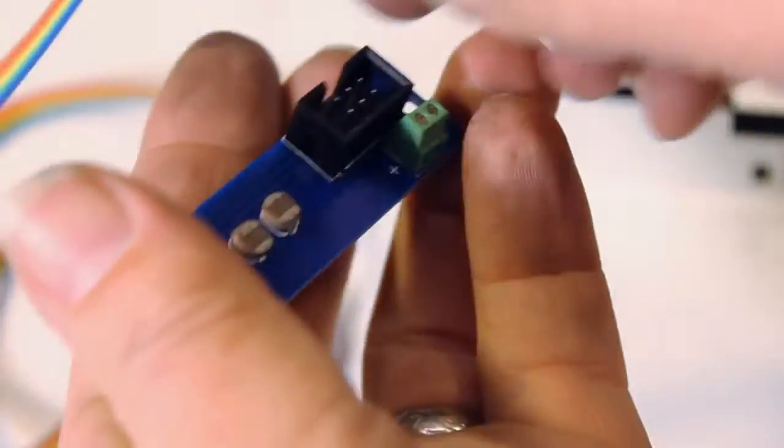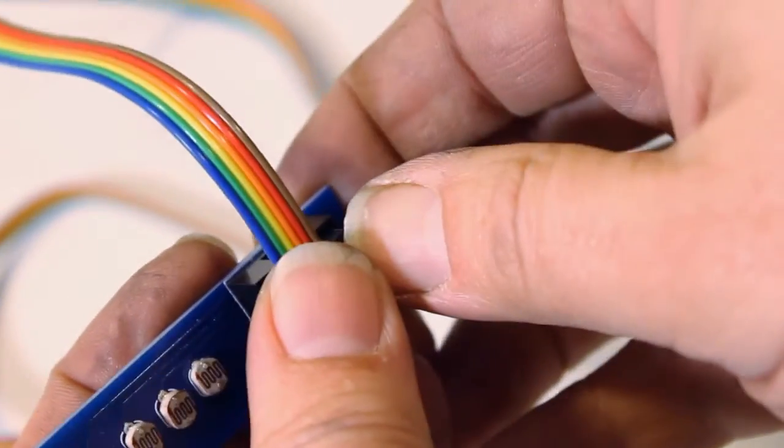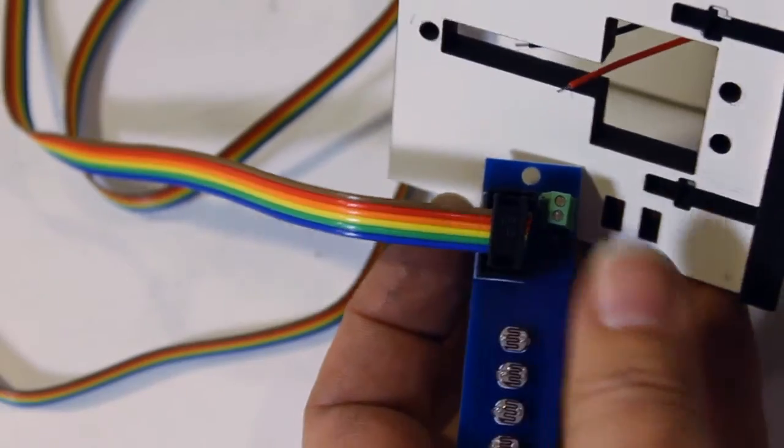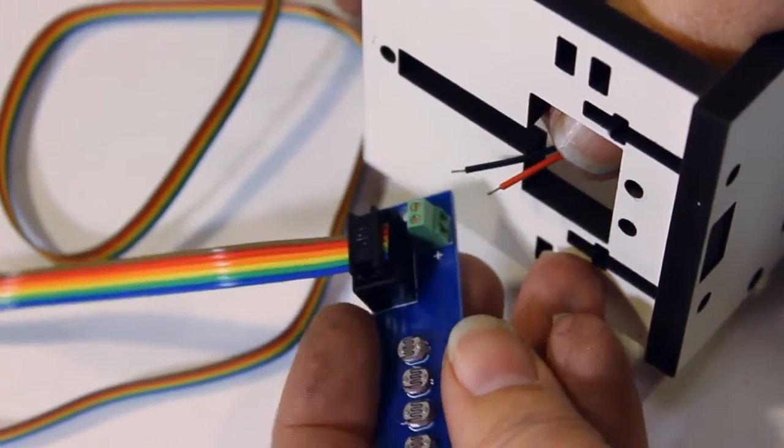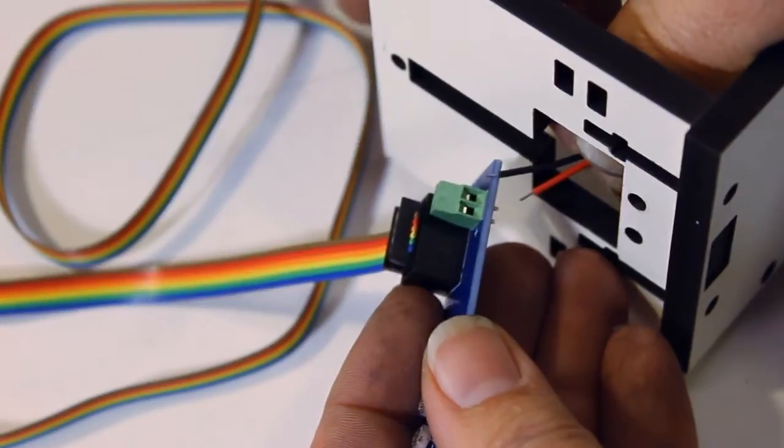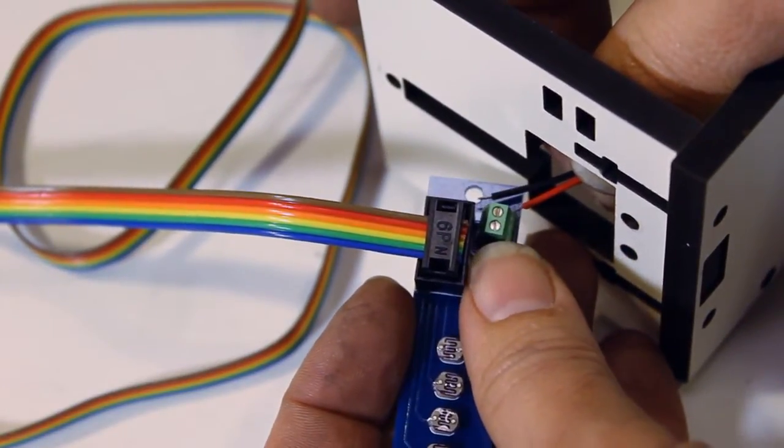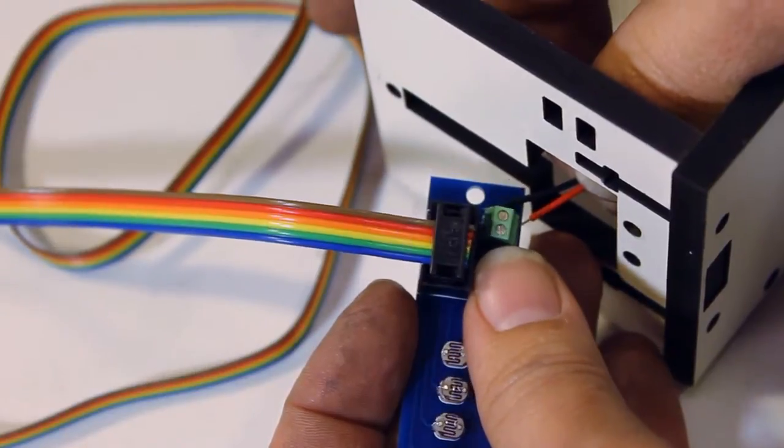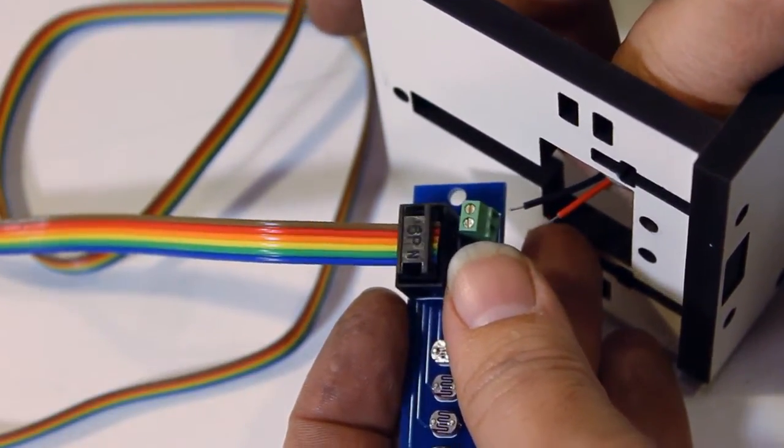Plug the ribbon cable into the sensor board, and then screw the ends of the laser wires into the screw terminal using a very small standard screwdriver. This would be something like an eyeglasses screwdriver or something of a similar size.